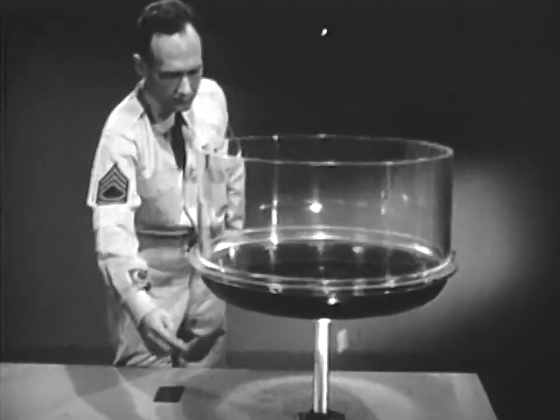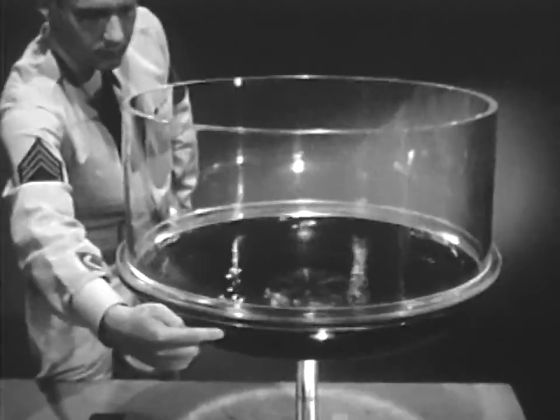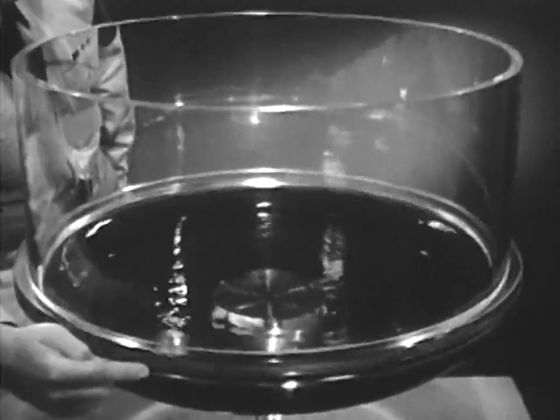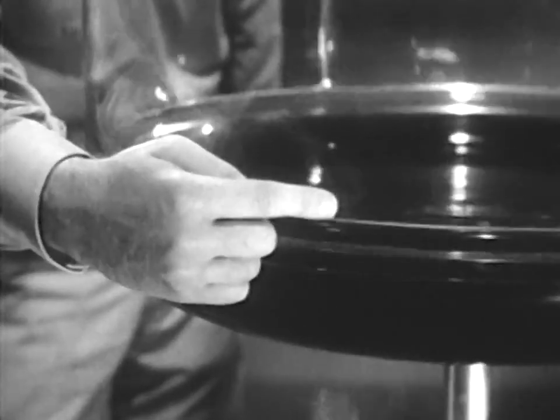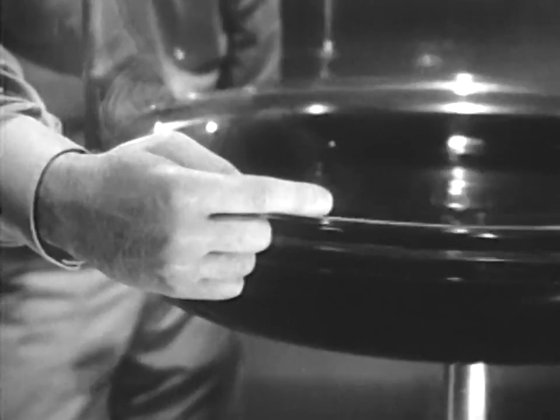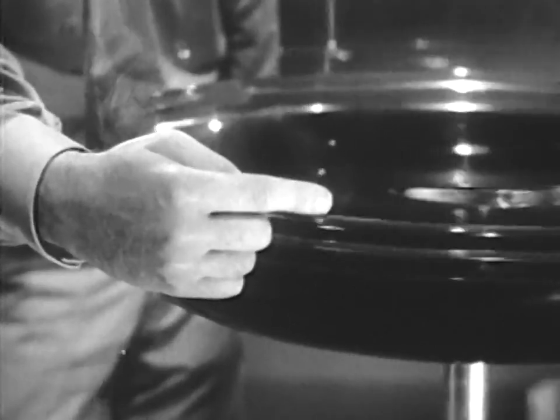When the bowl is revolved, the clinging quality of the oil causes it to revolve also. As a result, the centrifugal force set up causes the oil to move from the center to the outer circumference and creep up the sides of the bowl.